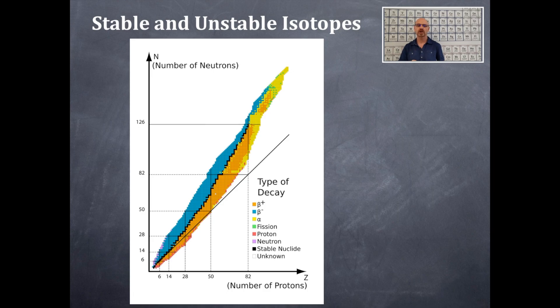You have fission and proton emission as well, and neutron emission. So, this gives you an idea of the stability and unstability of isotopes.